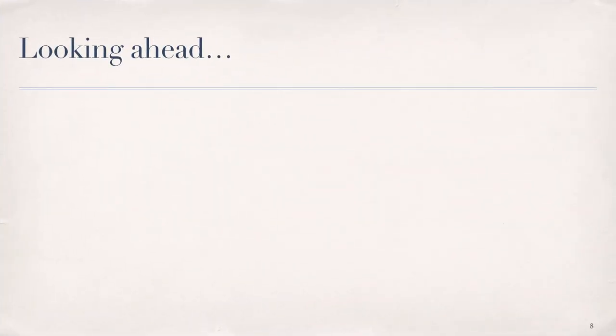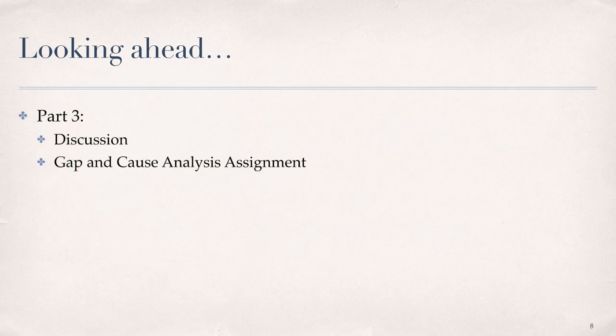This brings us to the looking ahead in terms of next steps. Part 3 for this module consists of two activities. The first is a discussion in which I'm asking you to select one of the tools and techniques presented, or another of your choosing, related to cause analysis. Remember, we talked about BEM, PROBE, Pareto analysis, fishbone diagrams, and others. The second activity is the gap and cause analysis assignment,